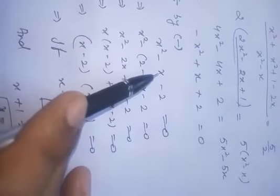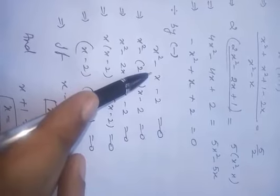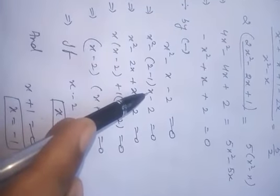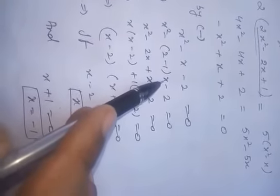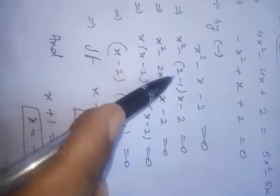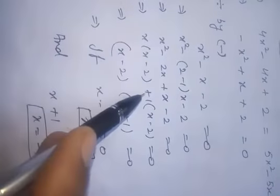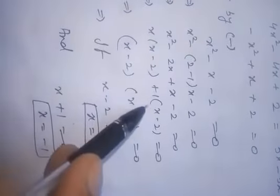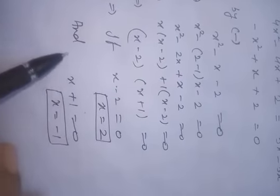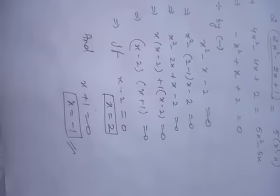Now take the factorization. Factorize 2 where the subtraction gives 1 and the multiplication of two digits gives 2, so 2 minus 1. We apply middle-term splitting as discussed in the previous class. Taking common: (2x)(x-2) + (1)(x-2) = 0, giving factors (x+1)(x-2) = 0. So x - 2 = 0 gives x = 2, and x + 1 = 0 gives x = -1. This is the required solution by the factorization method.